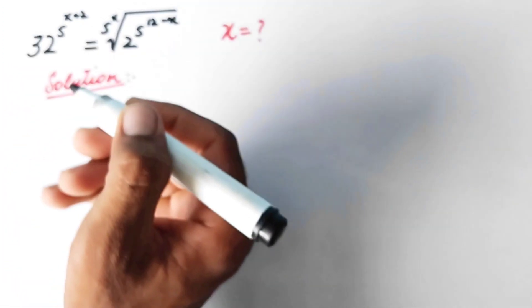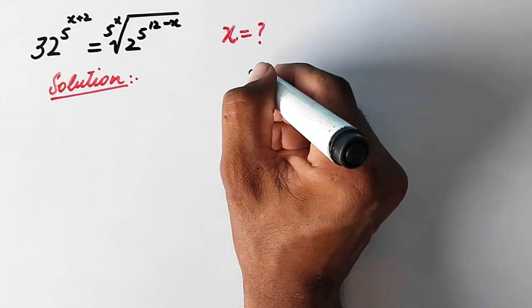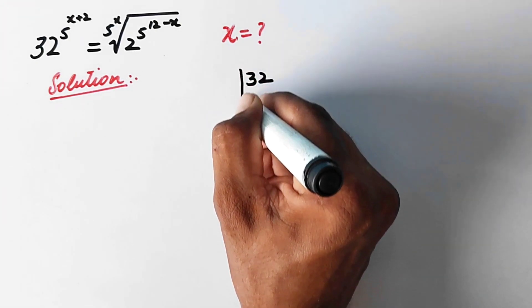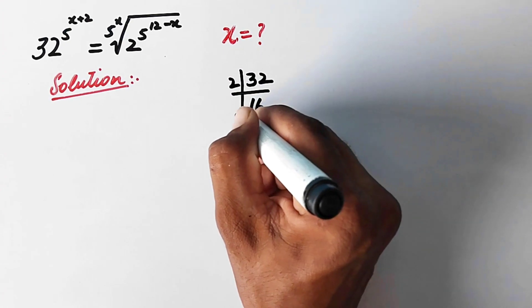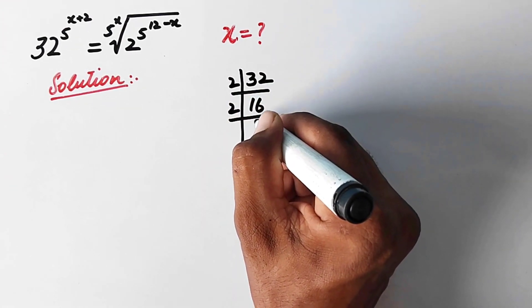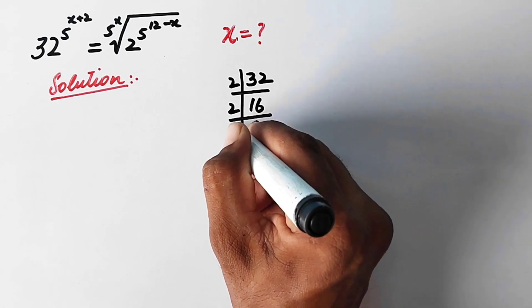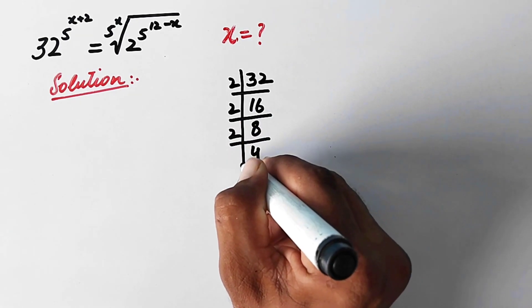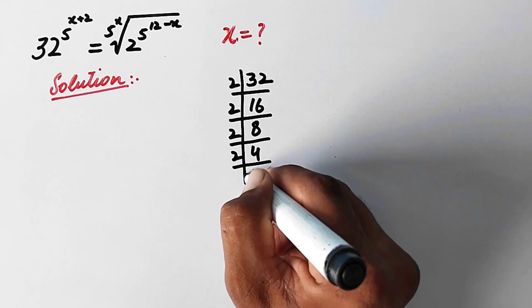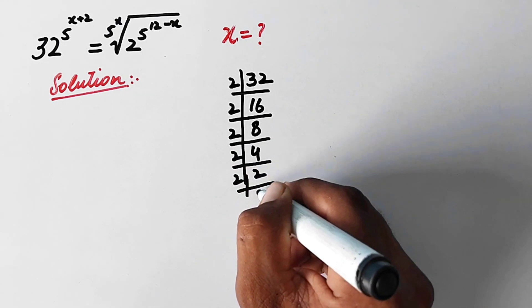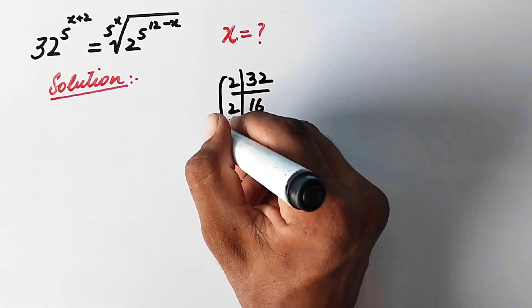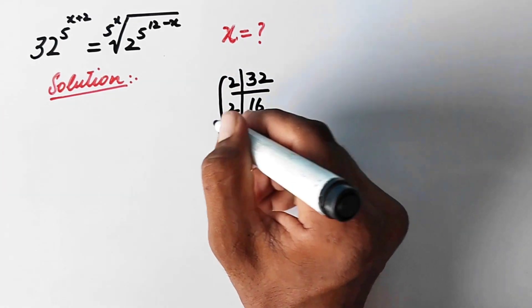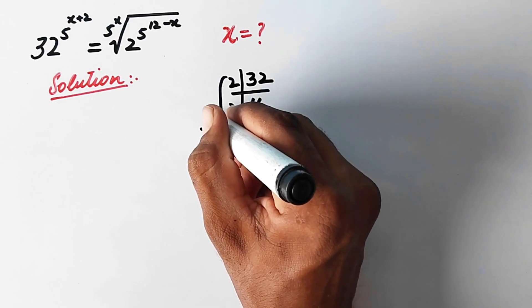In the first step, we can write 32 as 2 raised to the power 5 by factorization. 32 divided by 2 is 16, divided by 2 is 8, divided by 2 is 4, divided by 2 is 2, and 2 divided by 2 is 1. So we count 1, 2, 3, 4, 5 — giving us 2 raised to the power 5.